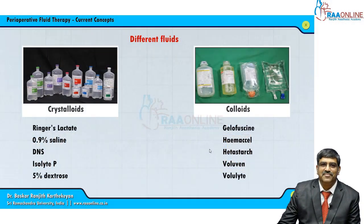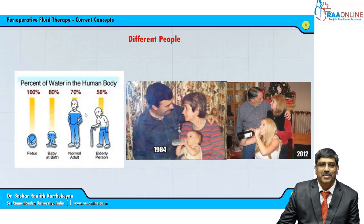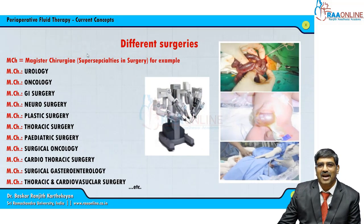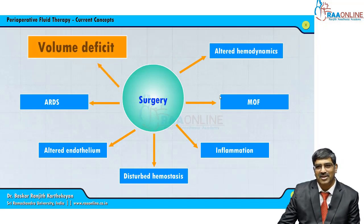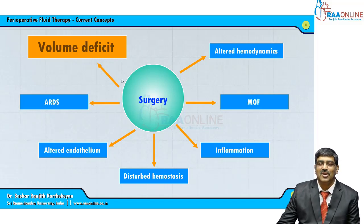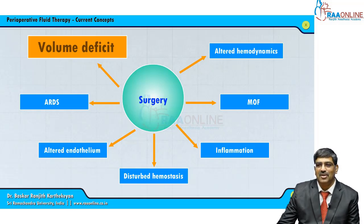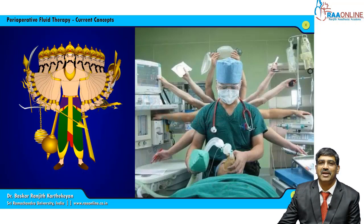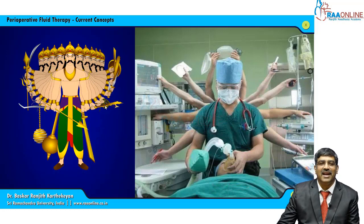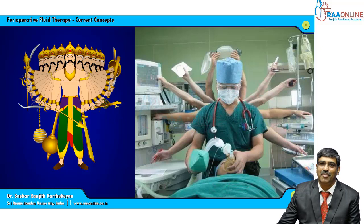You have different fluids, different patients with different fluid requirements, and different types of surgeries. Surgery can cause altered hemodynamics and injury to tissues, leading to volume deficit. So you have different surgeries, different people, and different fluids — how do you match these three? You have to be a magician to do that, and the anesthesiologist is the perfect person for it, needing to be a multitasking master to handle the situation.